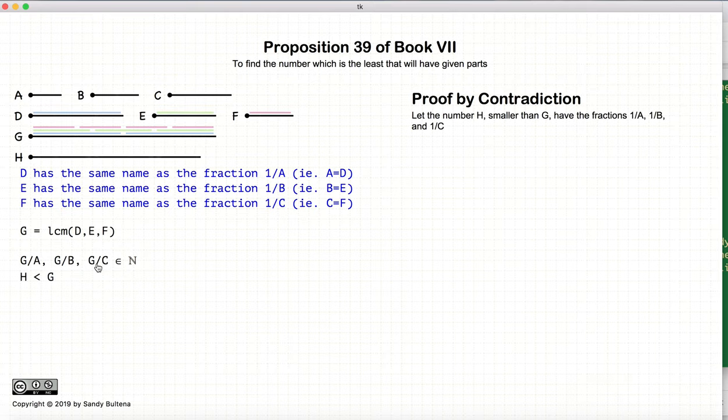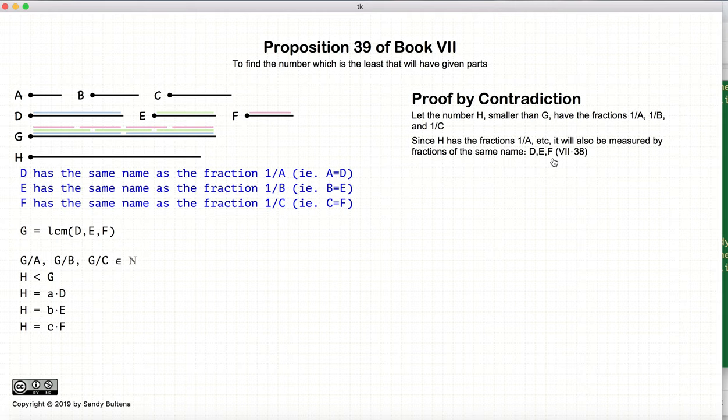So let's assume that we have another number H that also has the fractions H/A, H/B, H/C. And if it has the fractions of 1/A, et cetera, then it will also be measured by fractions of the same name, D, E, and F, respectively. That's according to proposition 38.